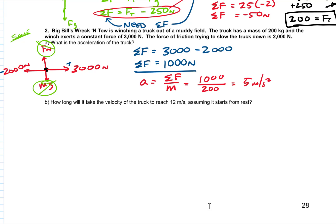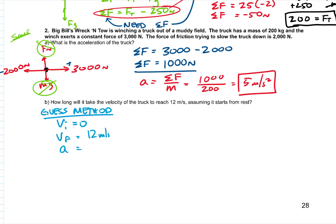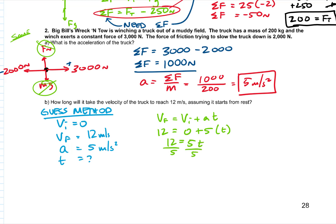How long will it take the velocity of the truck to reach 12 meters per second if it starts from rest? This is a kinematics problem. Initial velocity is 0, final velocity is 12 meters per second, and acceleration is 5 meters per second squared. Using the equation: final velocity equals initial velocity plus acceleration times time. So 12 equals 0 plus 5t, meaning 12 equals 5t. Dividing both sides by 5, time equals 2.4 seconds.